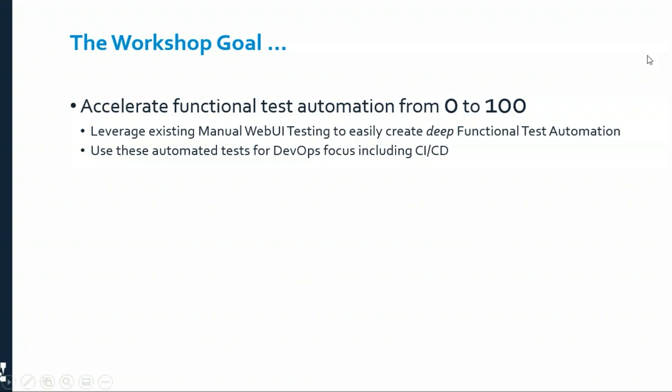When I say 'deep,' it's about creating Selenium tests and the underlying API scenario tests that interact with the back-end applications and services. We'll also show how you can take those automated tests and incorporate them into a CI/CD process. You won't be plugging it into Jenkins today, but you'll see that command lines are automatically provided for you — just plug into Jenkins and you're done. That's the goal: how to get from zero to a hundred, from manual to automation.